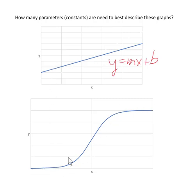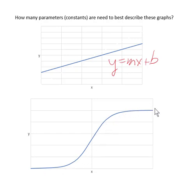A more likely response, if you vary the ligand — which we'll call x — over a very large range, is the sigmoidal curve. The y variable can be the concentration of yellow color in the plate. So how many parameters would we need to describe this equation? It turns out we need four parameters.